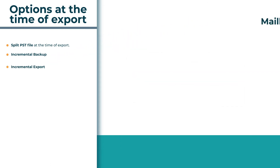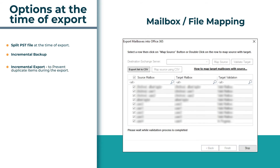The software allows you to map EDB mailboxes and OST and PST file mappings with a target at the time of export, where you can export the source and target mapping list into CSV format. Users can also map source with target mailboxes by using a CSV file or map source option.